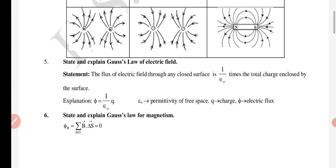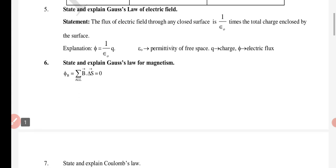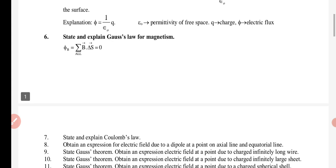State and explain Gauss law of electric field. The flux of electric field through any closed surface is 1 by epsilon nought times the total charge enclosed by the surface. State and explain Gauss's law for magnetism.